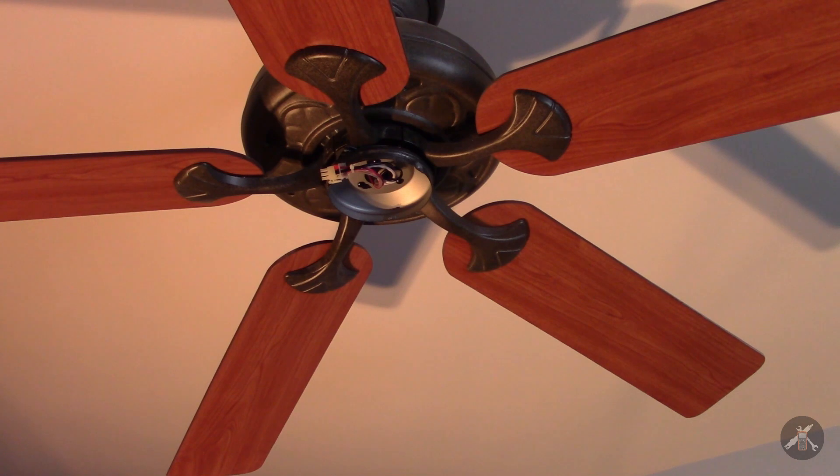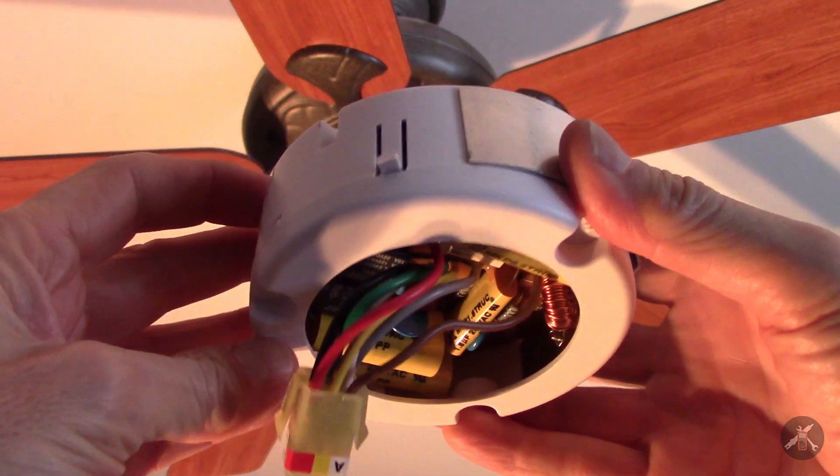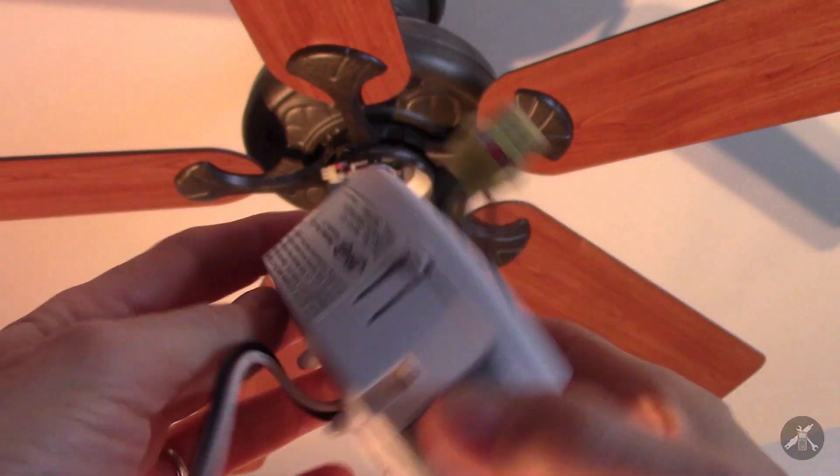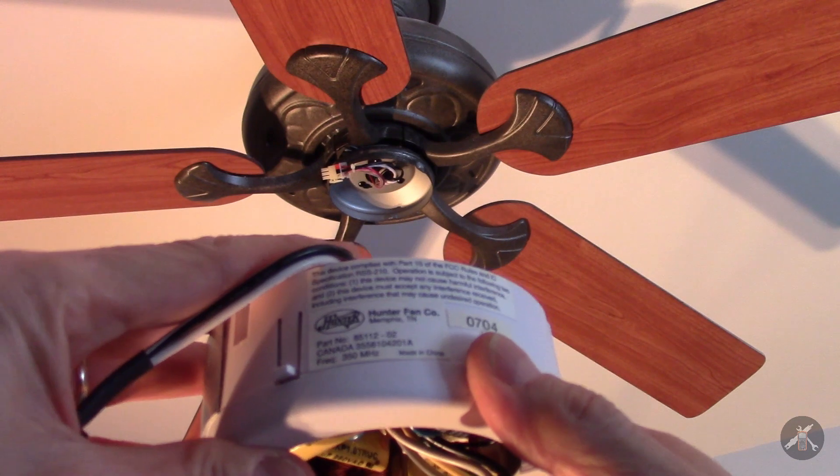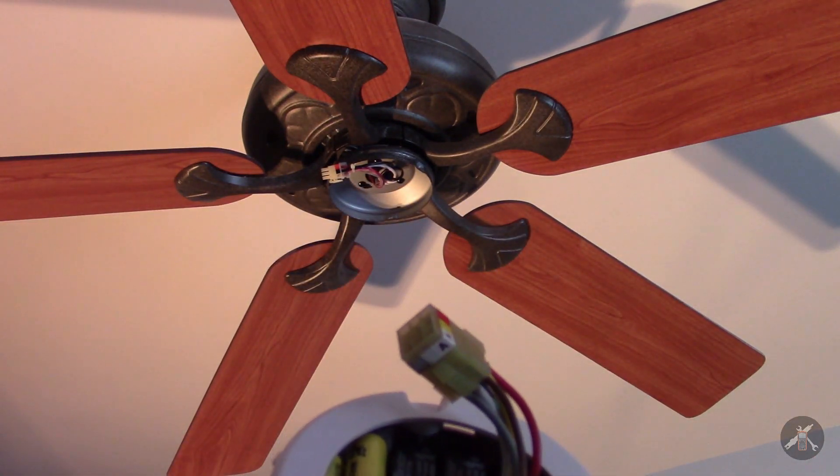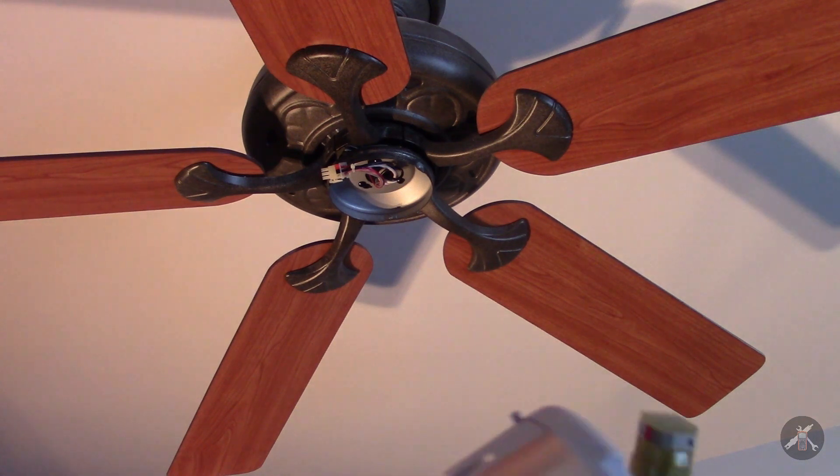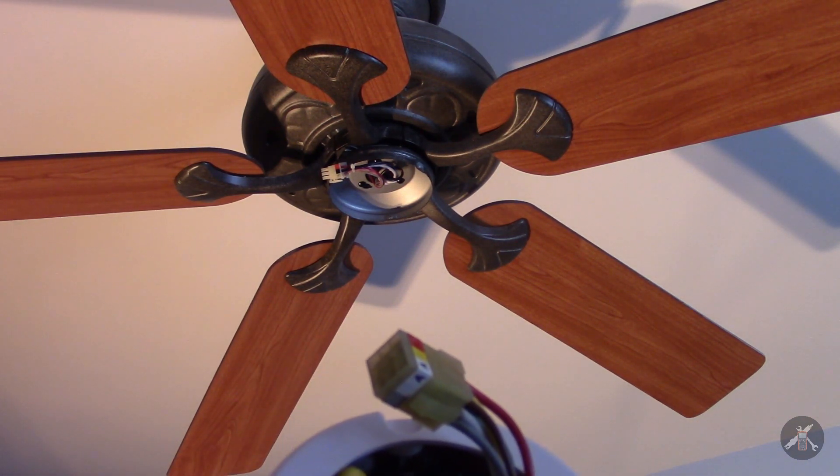I'm working on my Hunter fan. This one's about 15 years old and it had one of these control boxes in it, the 85112-02. The motors work, but I'm having some trouble with the lights.